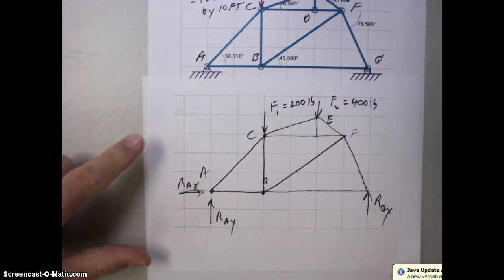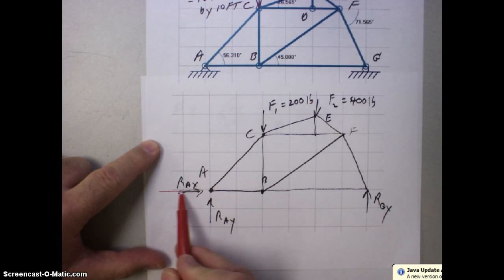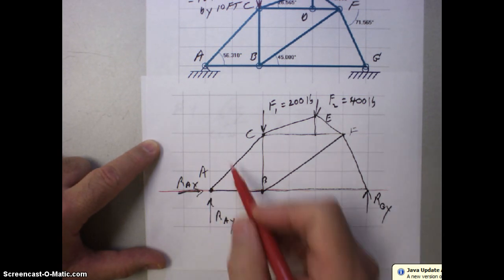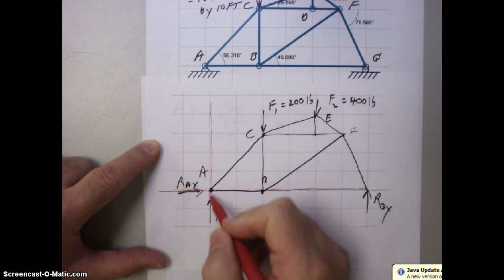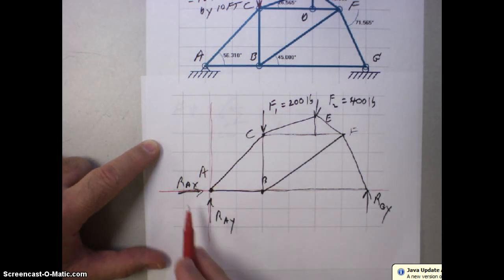A couple of things we need to get off our free body diagram. One is we need to look at the line of action of RAX and see it passes through our point here, point A, which is a zero distance. We look at the line of action of RAY. That's a zero distance.